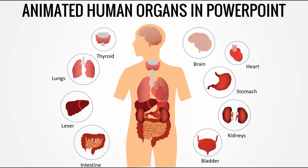Then the kidneys will come to the left and right side. It will show you the intestine — the large and the small intestine — and then you have got the bladder there.